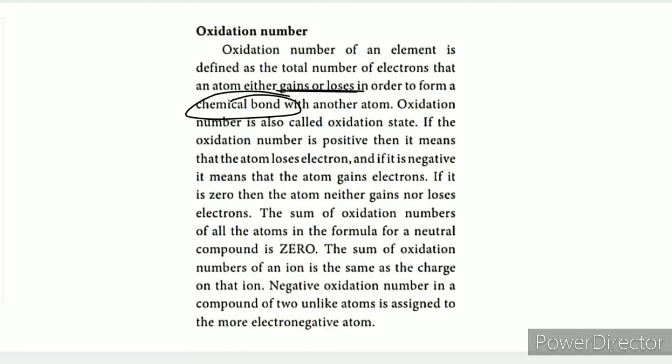When we consider ionic bond, covalent bond, and coordinate bond: in an ionic bond, the total electron is transferred. In a covalent bond, we share two pairs. In a coordinate covalent bond, one pair is shared. The oxidation number of atoms joined by electrons is determined by which electrons are gained or lost.